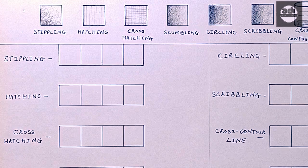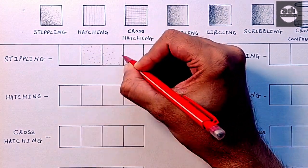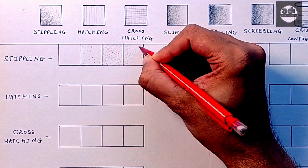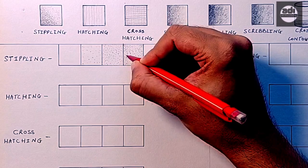Stippling is a mark making technique where you represent value using dots. The darker the value, the closer and more dots. The lighter the value, the more spread out and less number of dots.